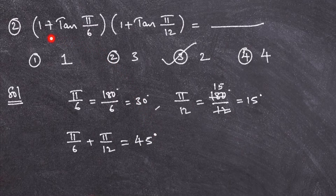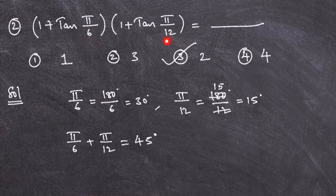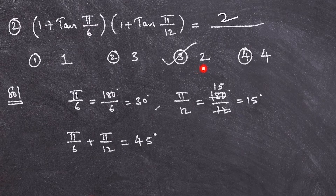So we have the form (1 + tan a)(1 + tan b) and moreover a plus b is 45 degrees. Therefore (1 + tan a)(1 + tan b) = 2. The third option is the right option.